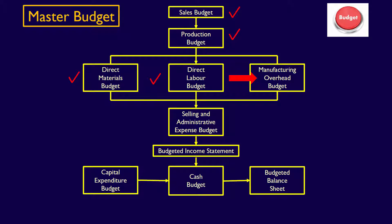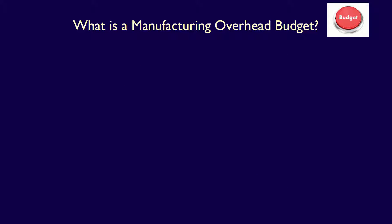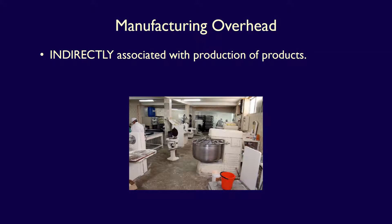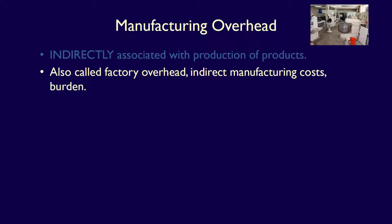We're now going to produce the next operating budget in the master budgeting process – the manufacturing overhead budget. Recall that manufacturing overhead are those costs which are indirectly associated with the manufacture of a finished product. Manufacturing overhead is also called factory overhead, indirect manufacturing costs, and burden.